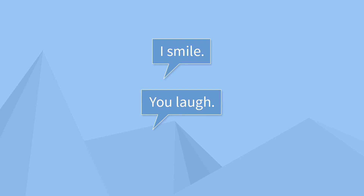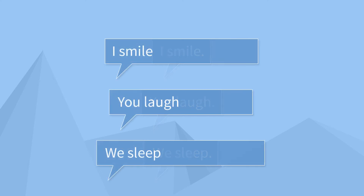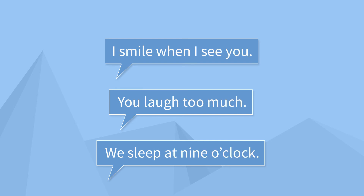What about intransitive verbs? As the name suggests, they don't take an object. For example: 'I smile,' 'You laugh,' 'We sleep.' We're unable to add an object, even if we add more information to the sentence — such as 'I smile when I see you,' 'You laugh too much,' 'We sleep at nine o'clock.' We still don't have any objects because the verbs are not done to anything. I don't smile my mouth; I don't laugh my voice or sleep my body. So transitive verbs must take an object, and intransitive verbs don't take an object.